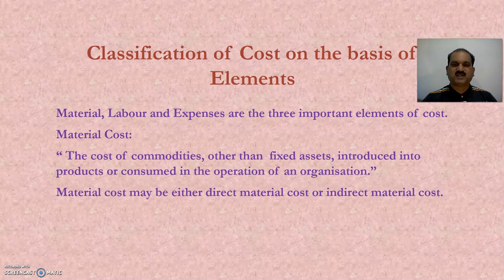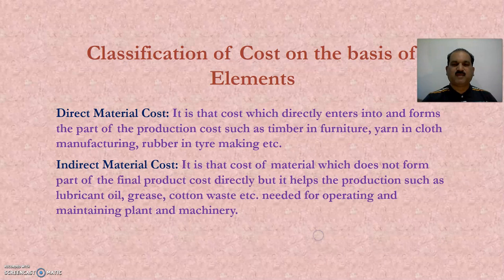Material, labour and expenses are the three important elements of cost. The cost of commodities other than fixed assets introduced into products or consumed in the operation of an organization is termed as material cost. Material cost may be either direct material cost or indirect material cost.